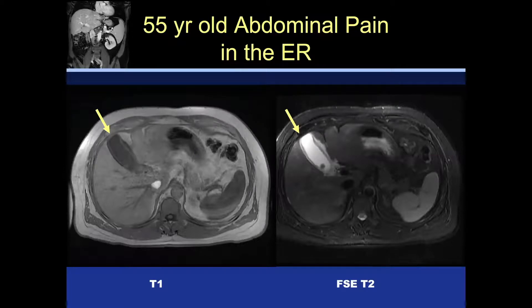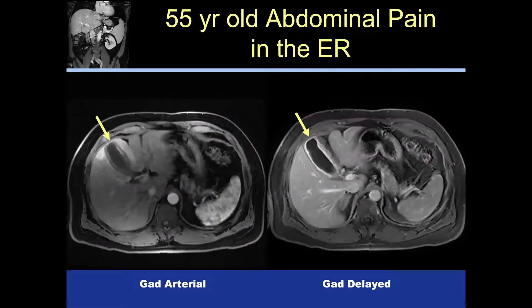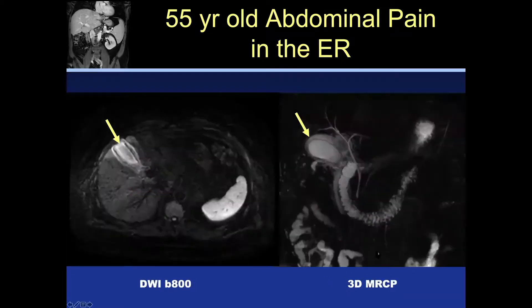Here's a clinical case: a 55-year-old came into the emergency room with upper abdominal pain. T1 and T2 images show an abnormal gallbladder and a gallstone. Early and delayed post-gadolinium imaging shows enhancement of the gallbladder wall. Diffusion-weighted imaging with a B value of 800 demonstrates a line of restricted diffusion representing the gallbladder wall.